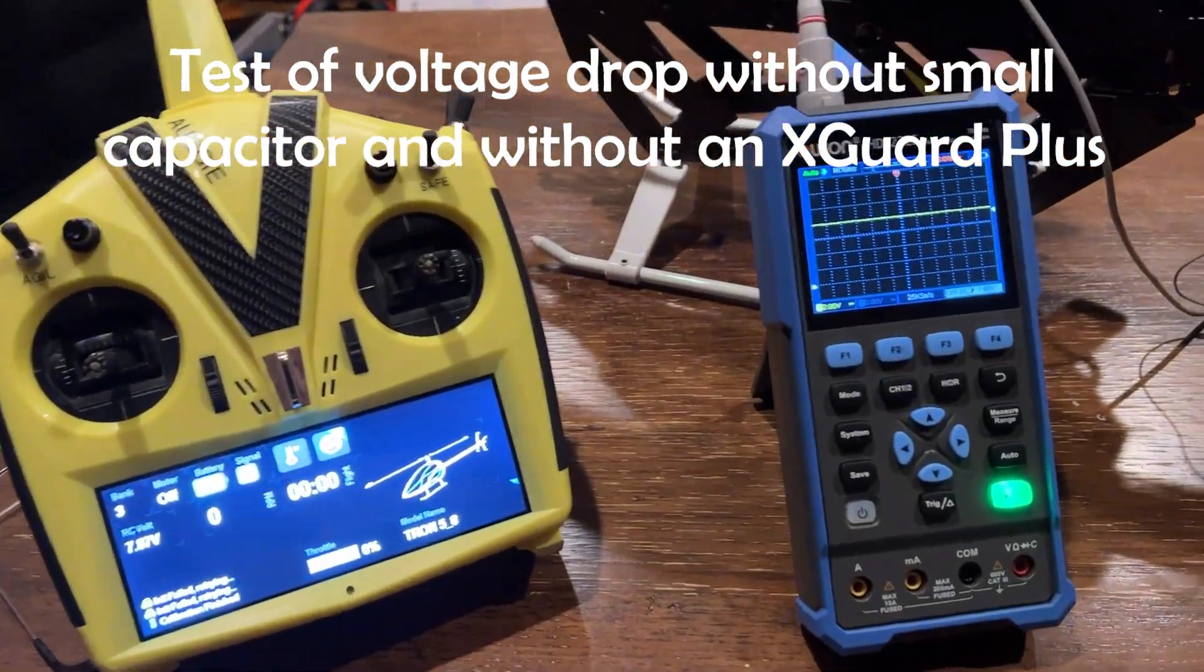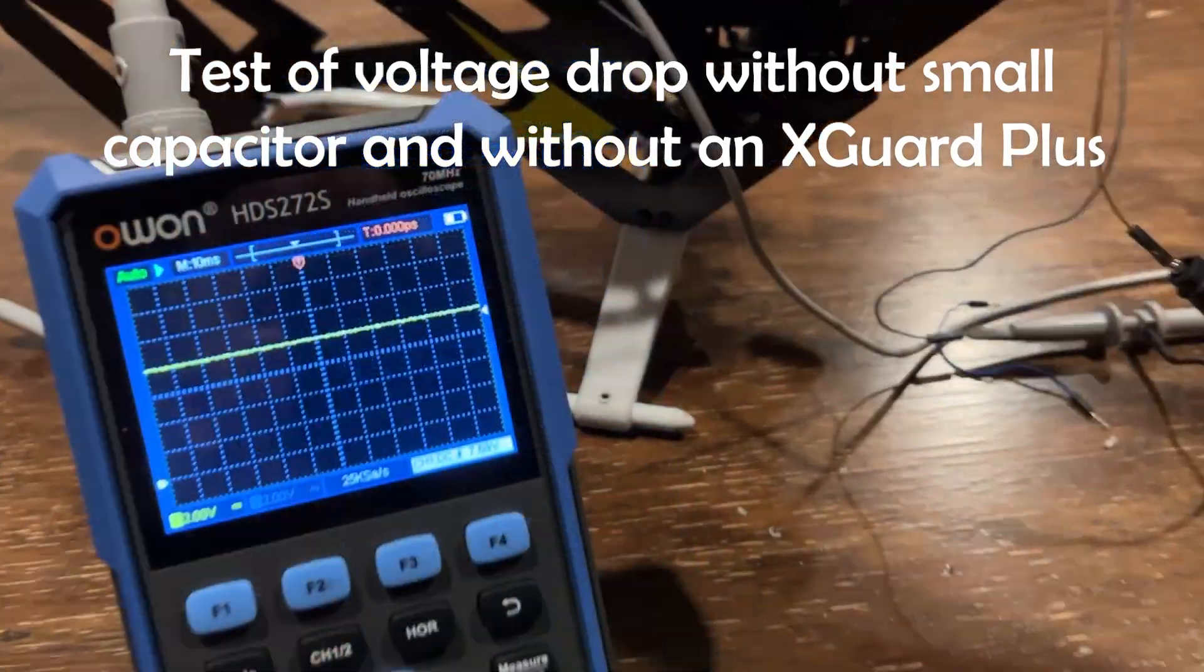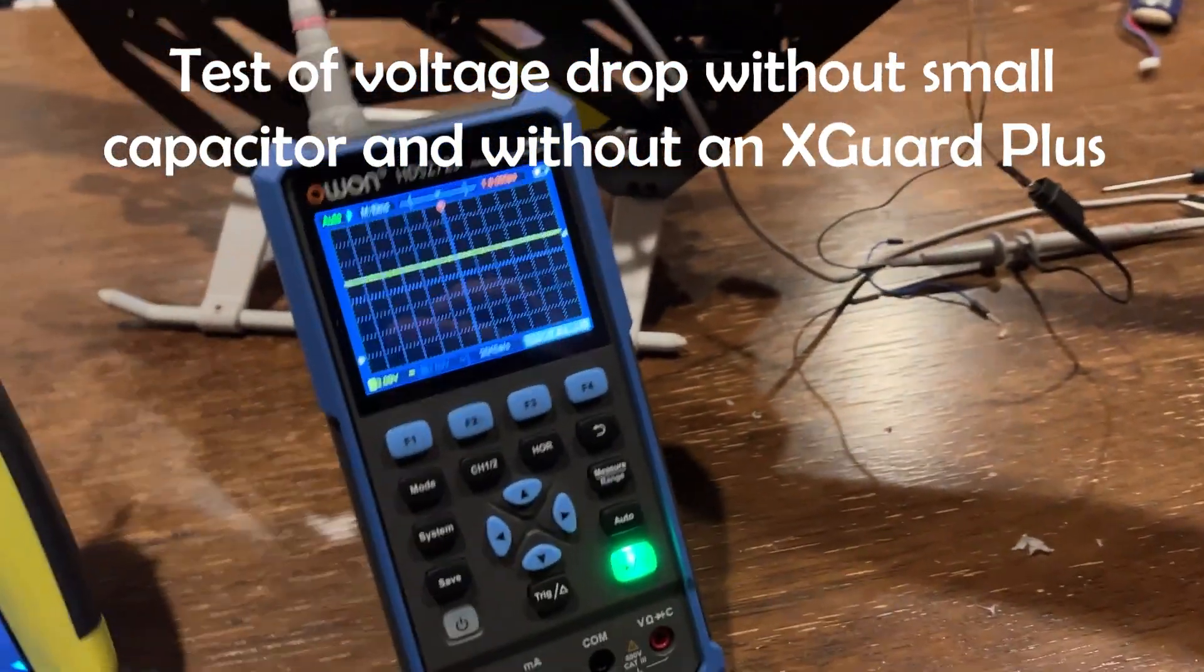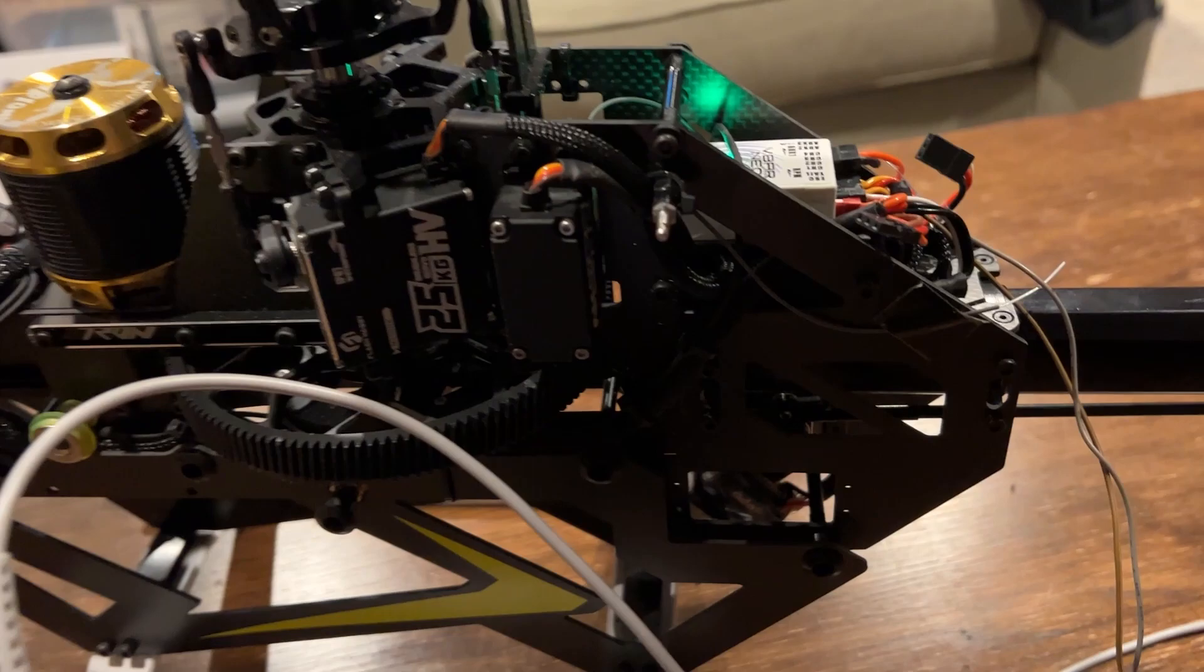Right guys, you wanted me to show you what the difference is when you have an X-Guard capacitor buffer connected and what happens with the voltage drops. So here we have the Tron 5.8